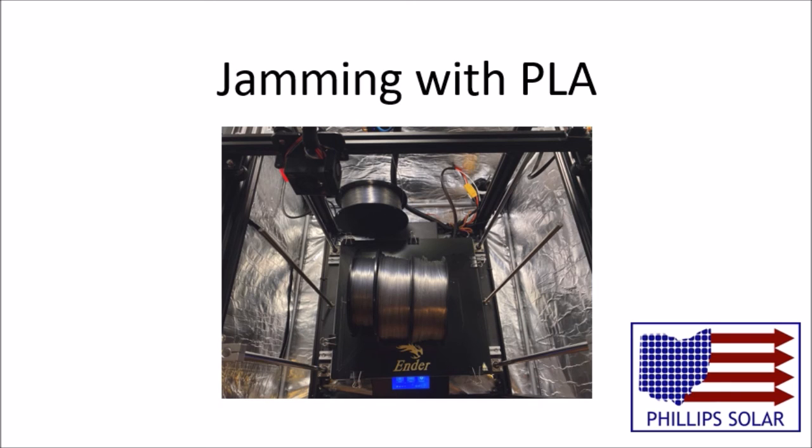Just FYI, I was printing PETG and ABS when I had all these jamming issues. My printers were in an insulated enclosure and were printing at high temperatures. The ambient temperature was about 110-115 degrees Fahrenheit. I added the thermal paste and everything was smooth sailing again until I switched to PLA filament.